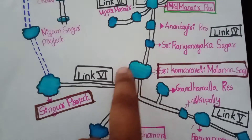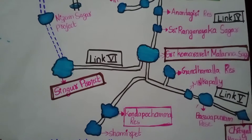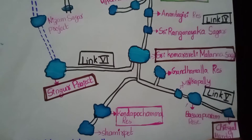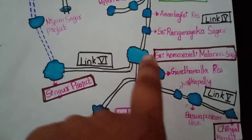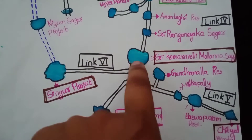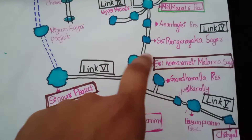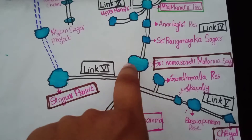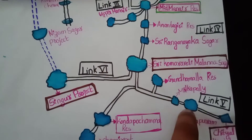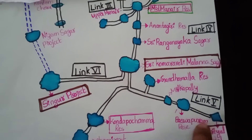Sri Kumraveli Mallana Sagar Reservoir has a water storage capacity of 50 TMC, making it a huge storage facility — the largest in the project. Coming to Link 5, it goes from Sri Kumraveli Mallana Sagar to Chittyal Mandal.